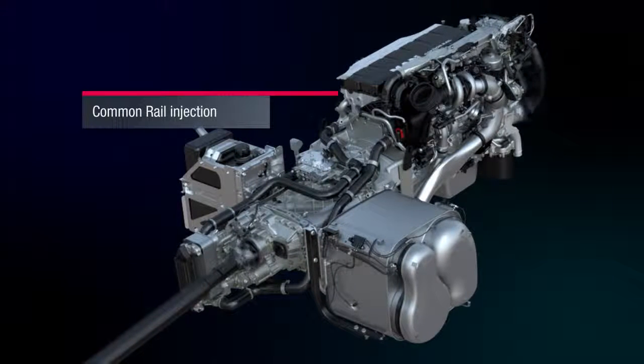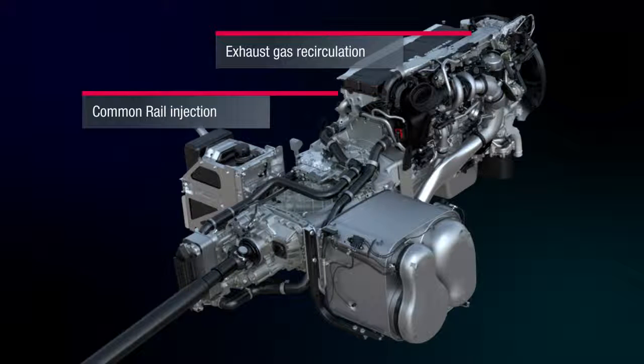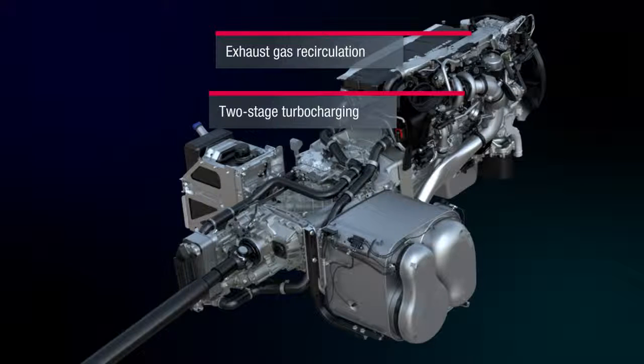The central Euro 6 engine components are the common rail injection, cooled and regulated exhaust gas recirculation, and two-stage turbocharging with intercooling.